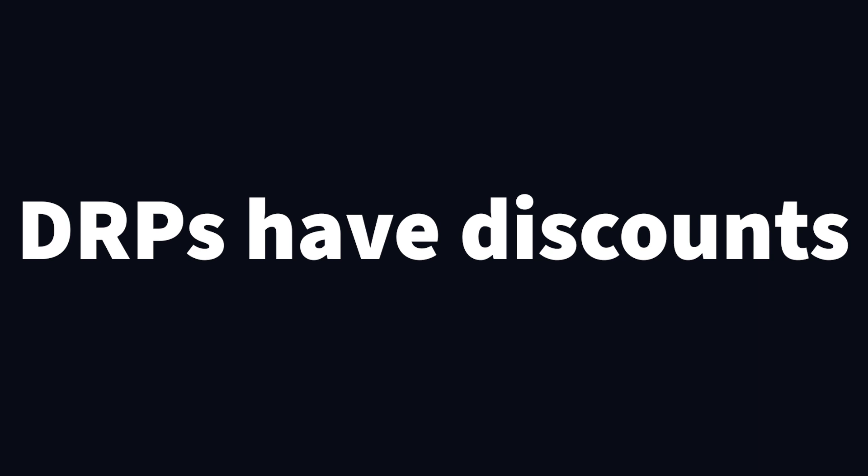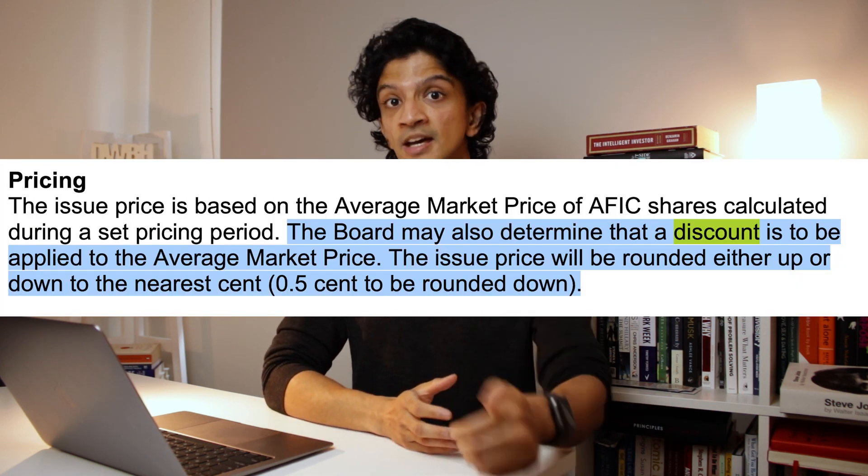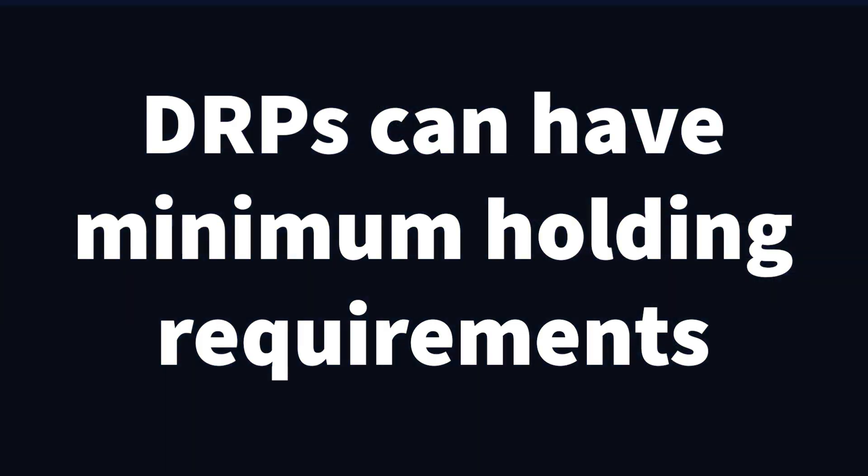Another feature is DRP discounts. A company may say: if you decide to participate in a dividend reinvestment plan, we'll allocate those shares at a 2.5% discount or some kind of discount to what the shares are currently trading at. This can be quite attractive if you're not looking for that cash flow now, because you're saving both in brokerage and by entering the market at a discount, which is fantastic.